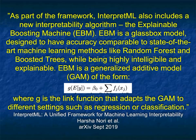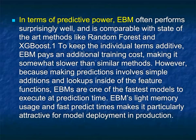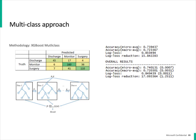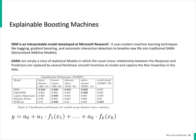This uses techniques like random forest and boosted trees, allowing the technique to be very understandable in terms of predictive power. EBM often performs surprisingly well, particularly when you compare it to other state-of-the-art black box techniques. It's also very fast and should be easy to use in clinical practice.